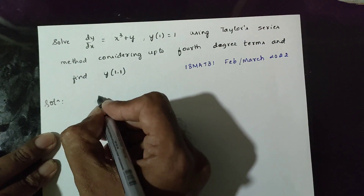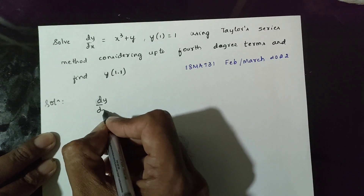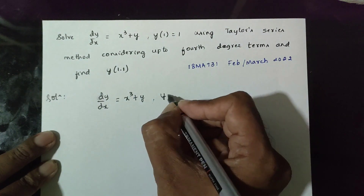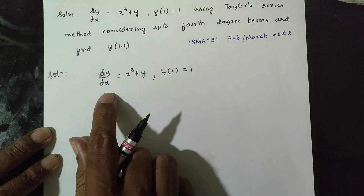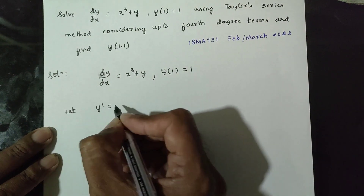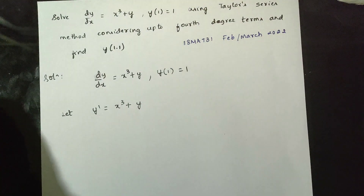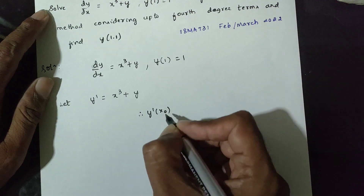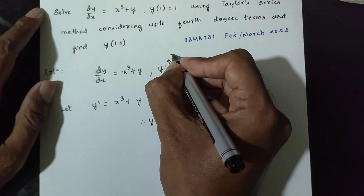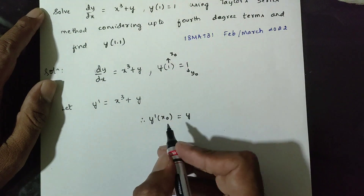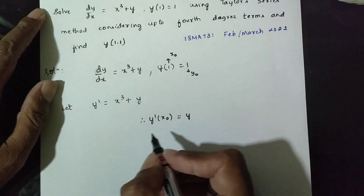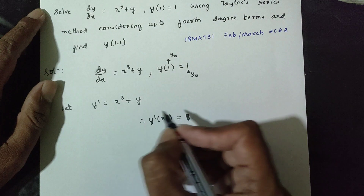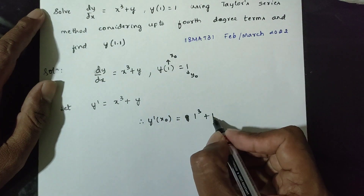First, dy/dx is equal to x³ plus y, y(1) is equal to 1. Let y-dash equal x³ plus y. At x₀ = 1 and y₀ = 1, y-dash of x₀ equals x₀³ plus y₀, that is 1 cube plus 1 equals 2.